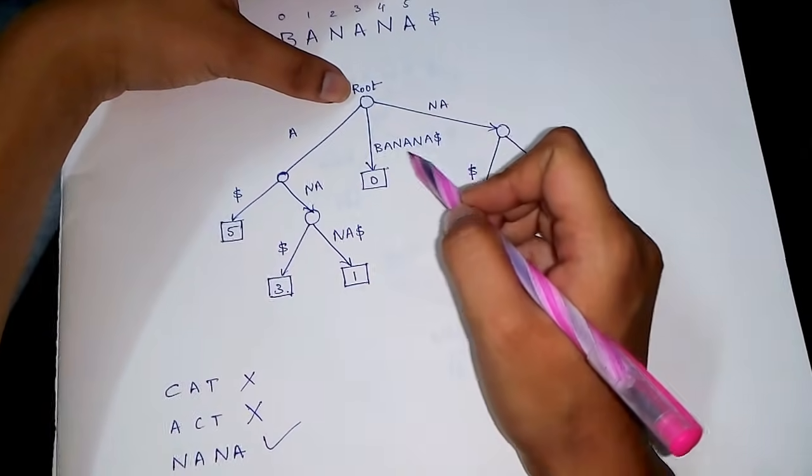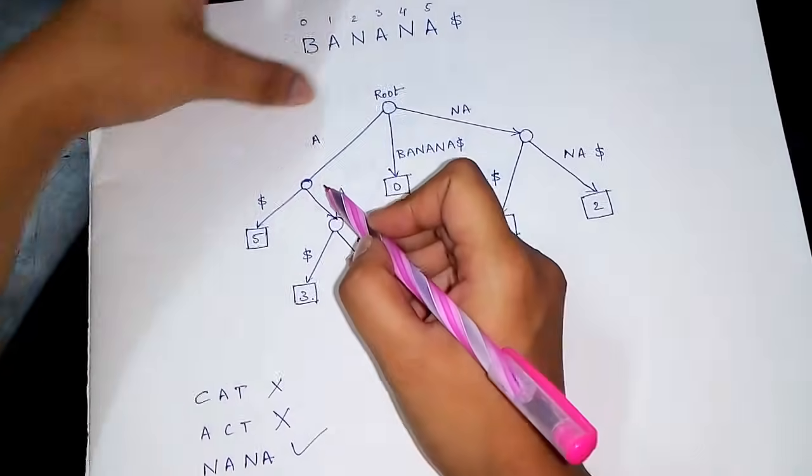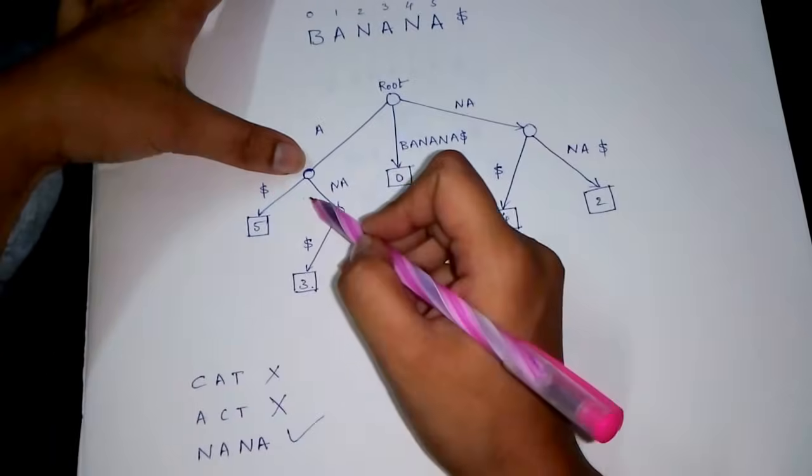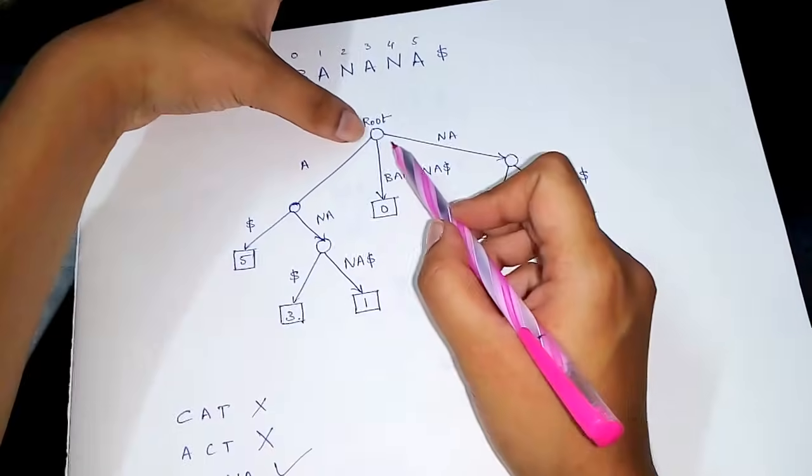...if there is any branch starting with 'c'. Since there is no branch, it's not a substring. And then 'act': there is a branch starting with 'a' but there is no 'c' at this point, so that is also not a substring. And 'nana': from the node...